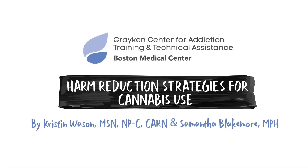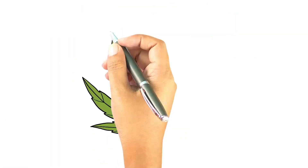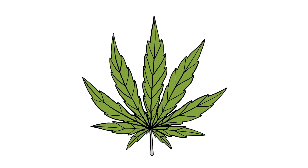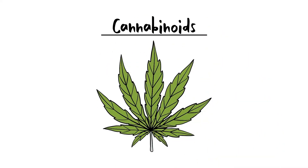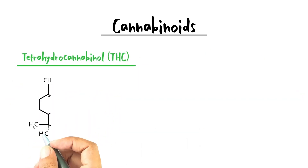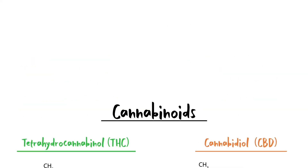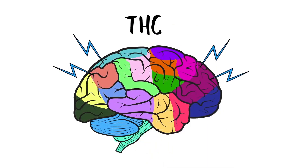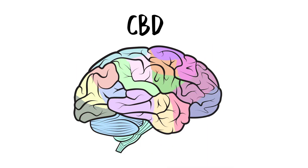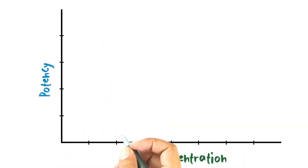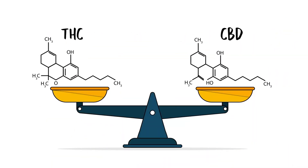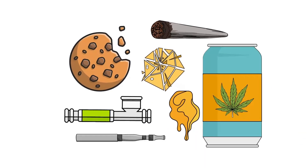Harm Reduction Strategies for Cannabis Use. Cannabis is a plant genus containing over 80 naturally occurring compounds called cannabinoids. The two primary cannabinoids are tetrahydrocannabinol, or THC, and cannabidiol, or CBD. THC is psychoactive; CBD is not. The potency of cannabis is related to THC concentration, CBD to THC ratio, and route of administration.